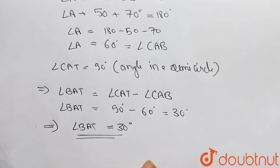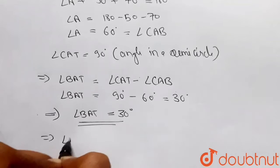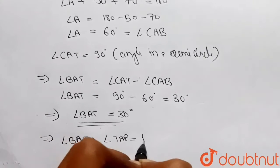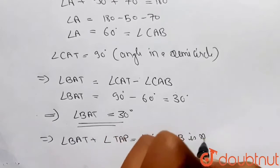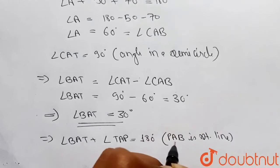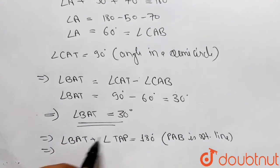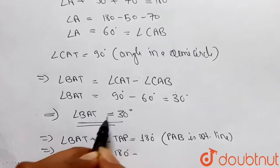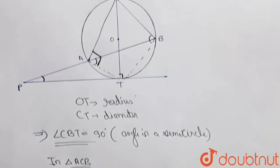Moving to the third part, we need to find angle APT. Since PAB is a straight line, angle BAT plus angle TAP must equal 180 degrees. Angle BAT is 30 degrees, so angle TAP equals 180 minus 30, which gives us angle TAP equal to 150 degrees.